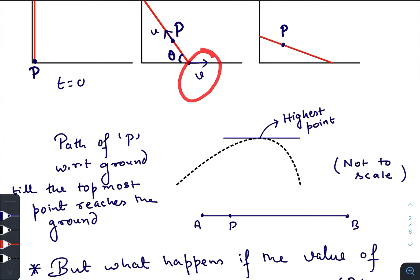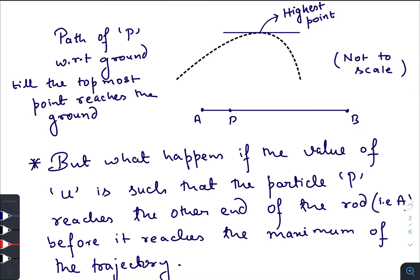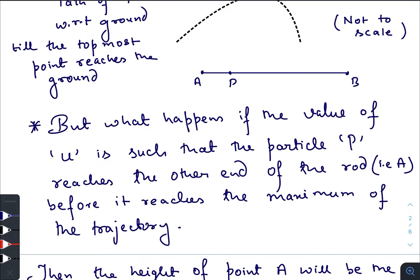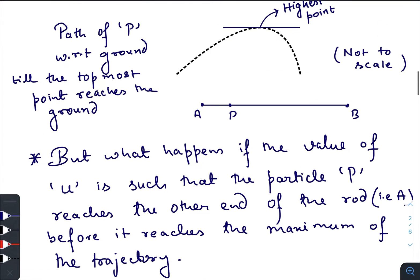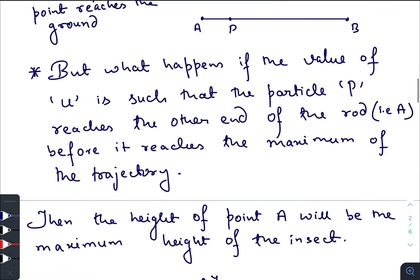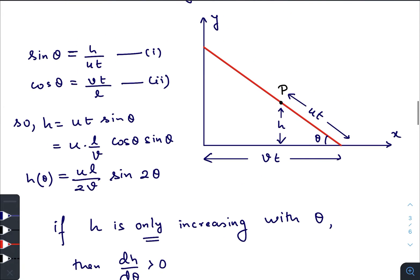Whether the beetle reaches the other end before the rod becomes horizontal depends entirely on the speeds u and v. There is another case: if the value of u is such that the beetle reaches the other end of the rod before reaching the maximum of the trajectory, the beetle terminates its motion at point A before reaching the highest point. In that situation, the height of point A will itself be the maximum height of the beetle.